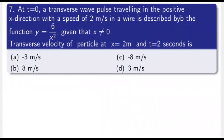Next question: at t = 0, a transverse wave pulse traveling in the positive x-direction with speed 2 m/s is described by y = 6/x² (where x ≠ 0). Find the transverse velocity of the particle at x = 2 m and t = 2 seconds. What is given: displacement at t = 0 is y = 6/x².